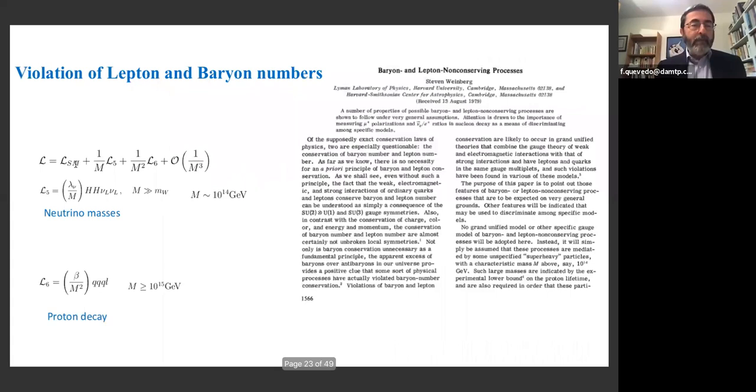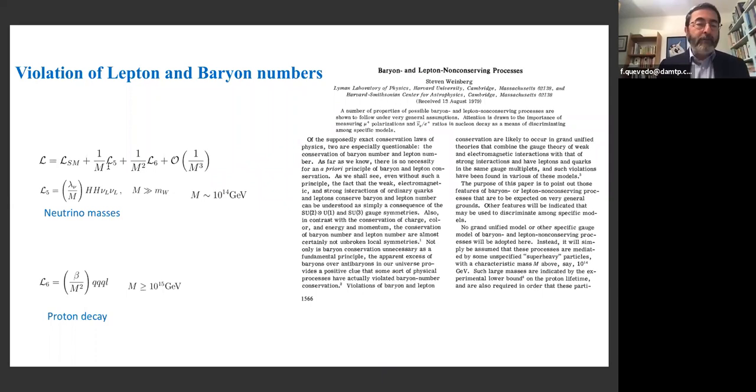Using effective field theory, he had beautiful ideas. He said, take the Lagrangian of the standard model, let's add the first correction. What is the dimension five operator you can add? It happens to be this one: Higgs, Higgs, neutrino, neutrino. It has to come with one over a mass. If the Higgs has a value in the vacuum, this will give mass to the neutrinos. We know neutrinos are very light. From doing that, we can compute the bound on this mass. He said whatever the physics that produces the mass of the neutrinos, it has to be at energies very high, 10 to the 14 GeV, which is many orders of magnitude beyond the 10 to the 3 GeV we are exploring now at CERN. He did the same thing with dimension six operators and found quark-quark-quark-lepton that will produce proton decay.